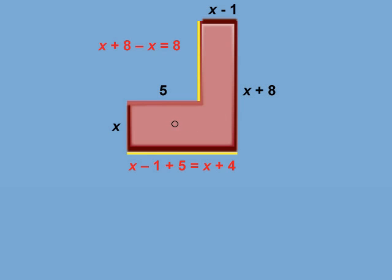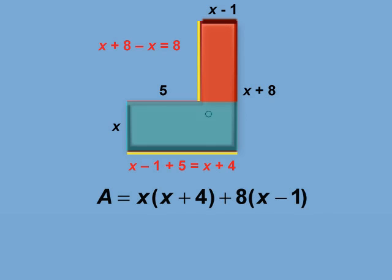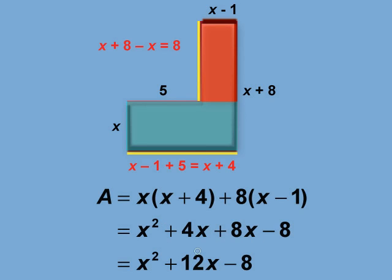The area of this composite figure is this section, which is x by x plus 4, and this section, which is 8 by x minus 1. Expand both terms and combine and simplify, and the formula becomes this, x squared plus 12x minus 8.